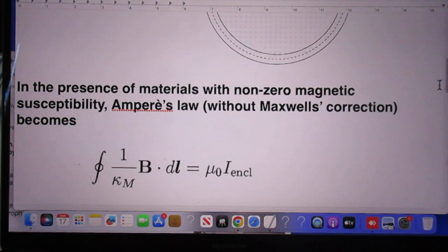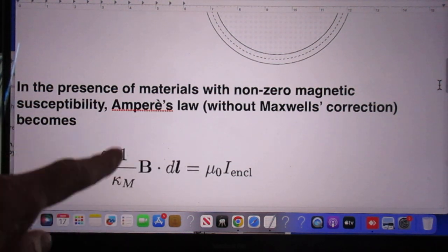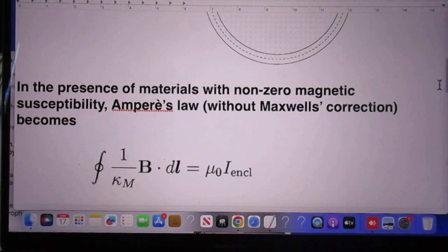Closed loop line integral of B dot DL divided by kappa M is mu zero times I enclosed. I don't like the word enclosed, but that's a separate issue. I will explain what it really means.